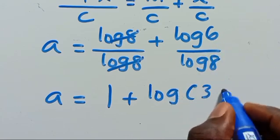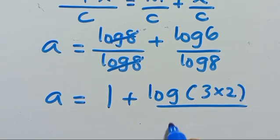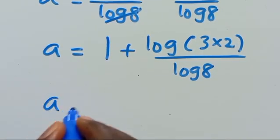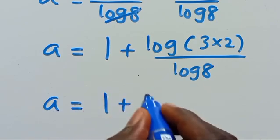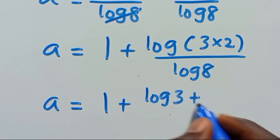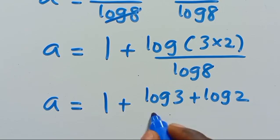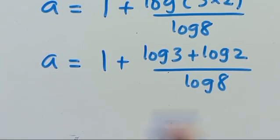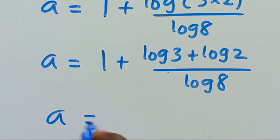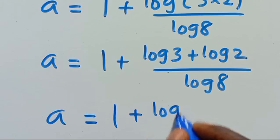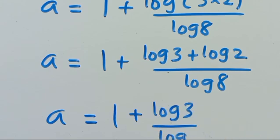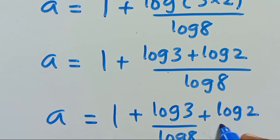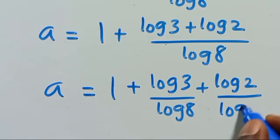We can write 6 as the product of 3 times 2. So from here we have a equals 1 plus log 3 divided by log 8, plus log 2 divided by log 8.